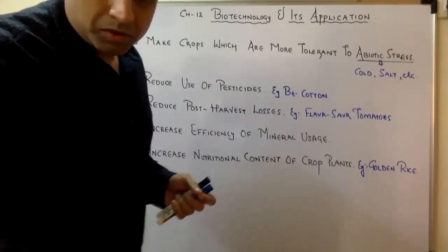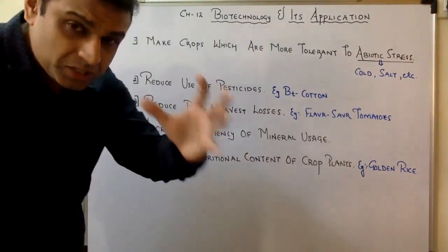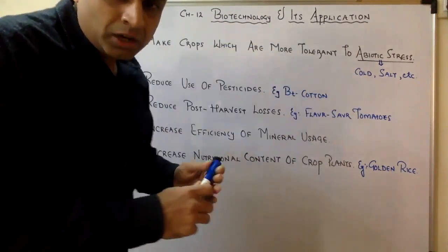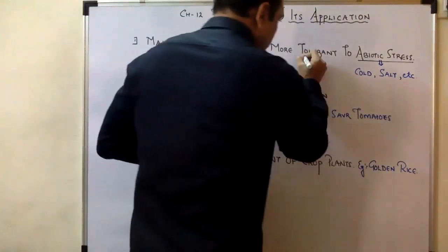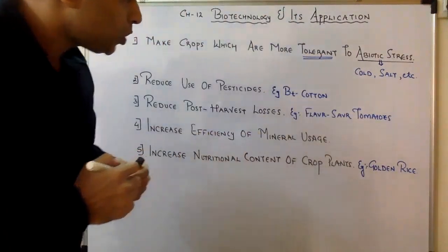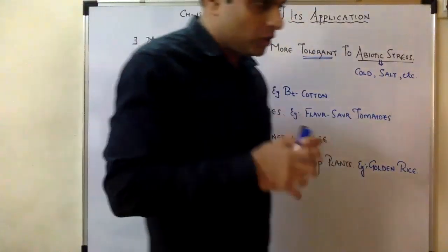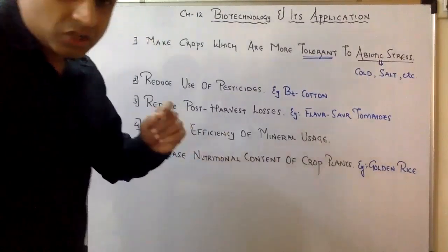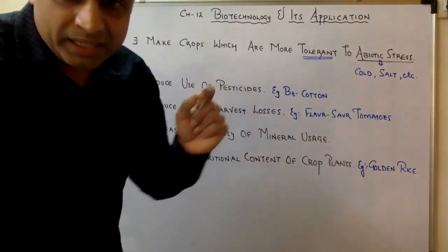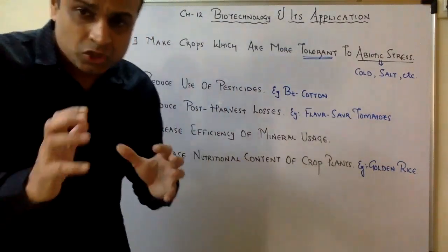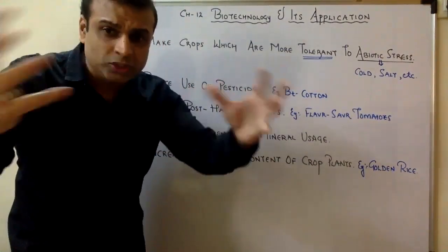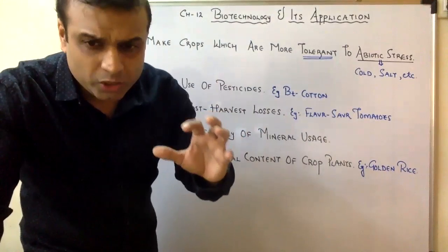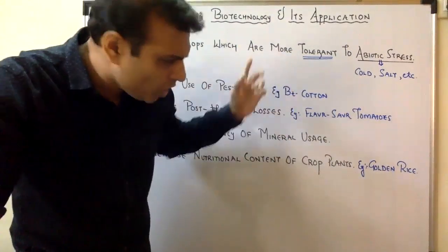Now let us see what are the formal aims of genetic engineering. The main aim number one is to make crops that are more tolerant to abiotic stress. If you want to cultivate any plant, it needs proper water. If the water is salty, the plant will die due to exosmosis. Consider India — a large area is surrounded by sea, meaning coastal areas where the soil is salty. Because of salt, many plants die there due to exosmosis, causing the cells to dry out.